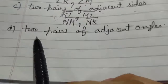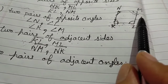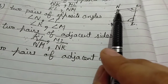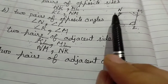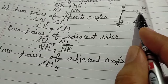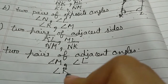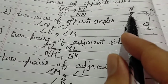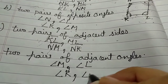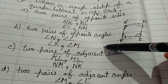Next, part D: write two pairs of adjacent angles. If I am taking angle M, what is the adjacent angle of M? It is N or L — both are possible. I am taking angle M and angle L as the first pair of adjacent angles. For the second pair, taking angle K — what is the adjacent angle with K? You can take N or L. I am taking K and N. Both are adjacent angles. Read the questions carefully and do practice of these questions.